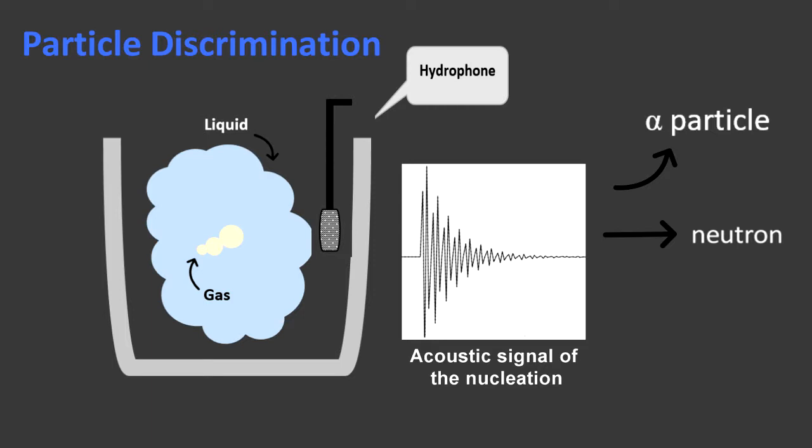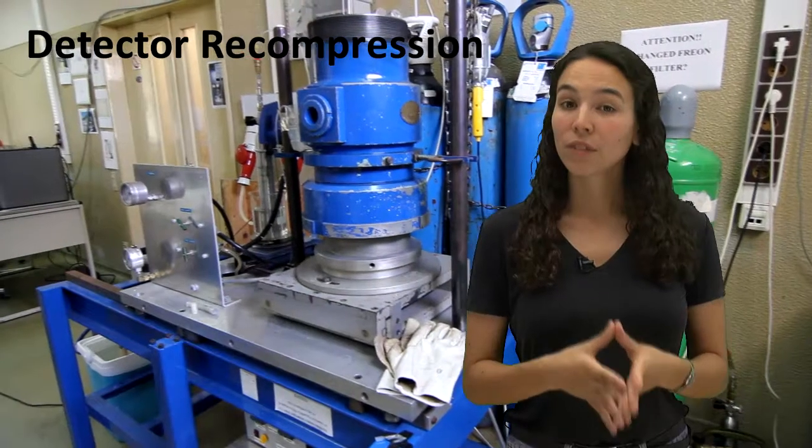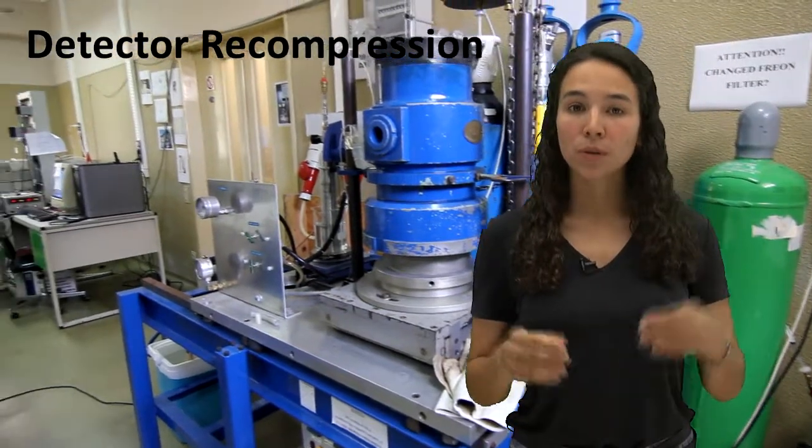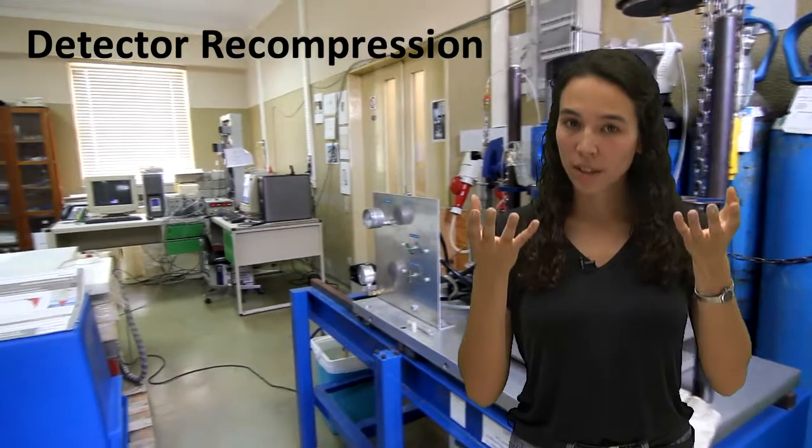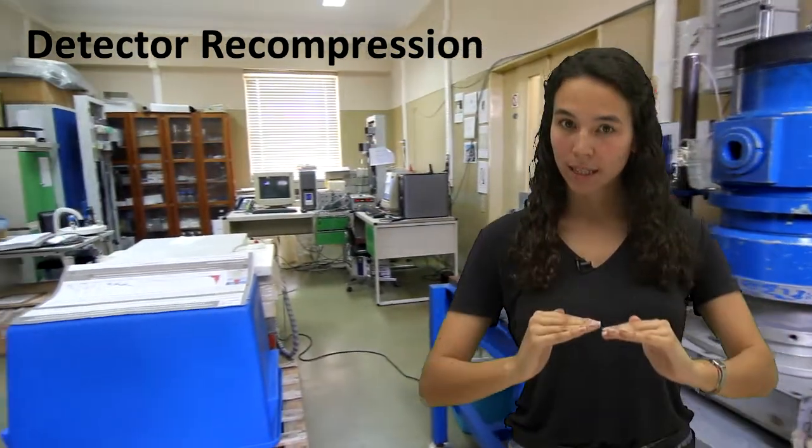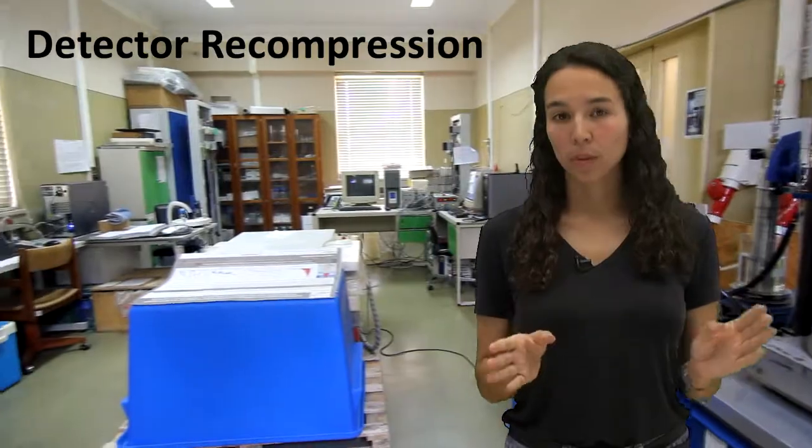With some luck, we will detect the rare event of a dark matter particle interaction. Whenever an event occurs, the chamber must be recompressed at high pressure so that the bubbles of freon don't reach the surface and return to their superheated liquid state and the chamber is operable again.